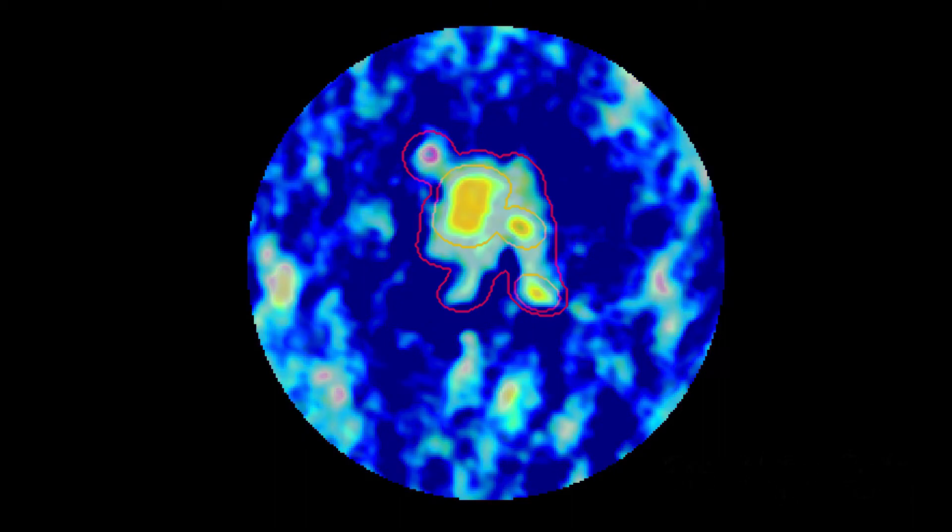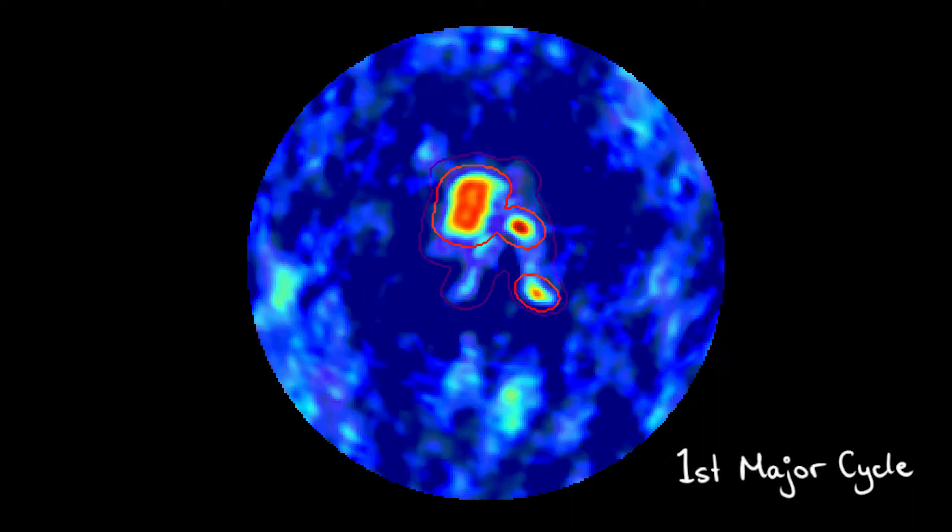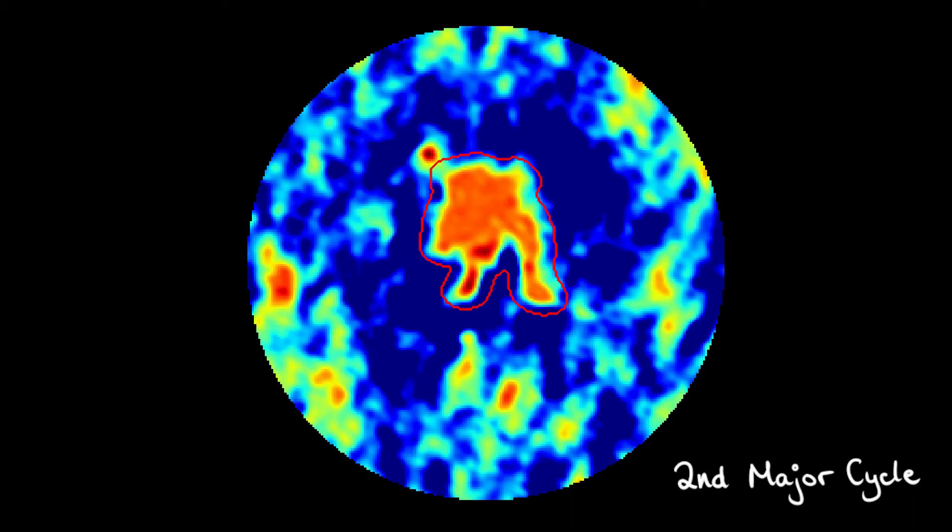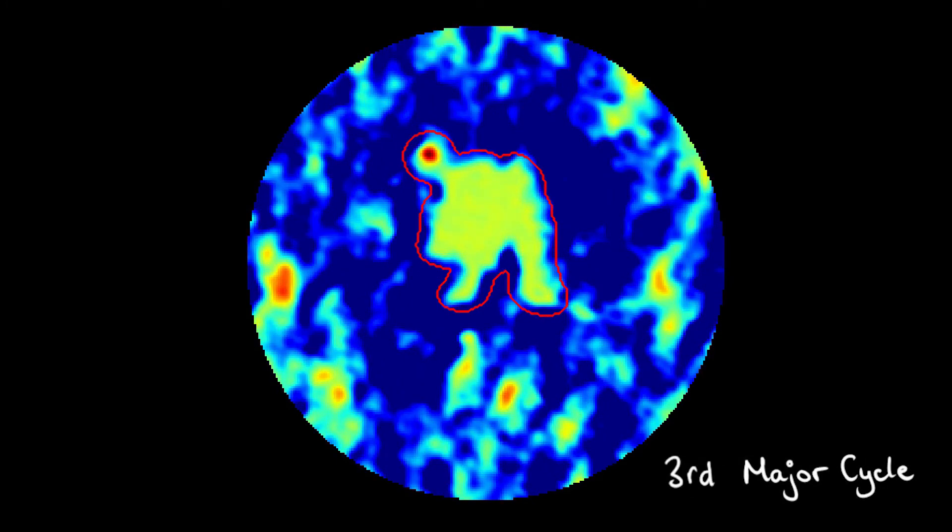Let's look at that one more time. The mask changes significantly during the first few major cycles, as the brightest emission is removed from the residual map, revealing more of the source.